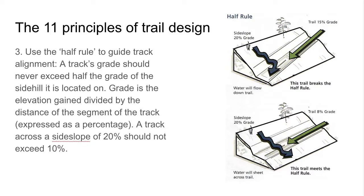The third principle: use the half rule to guide track alignment. A track grade should never exceed half the grade of the side hill it is located on. For example, if the hill has a 20% gradient, the trail itself — whether moving down or up — shouldn't exceed 10%. If it exceeds 10%, it breaks the half rule and will lead to significant erosion, with water flowing down the trail at a significant rate. Whereas with an average trail gradient of 8%, water will flow over and continue down the hill rather than travelling down the trail and causing gully erosion.